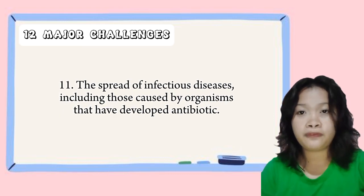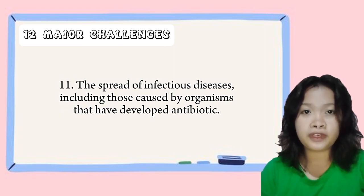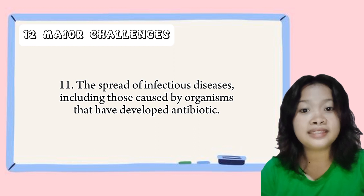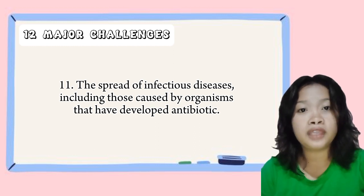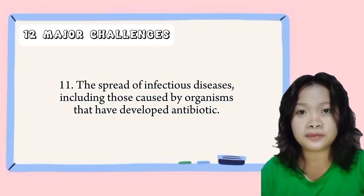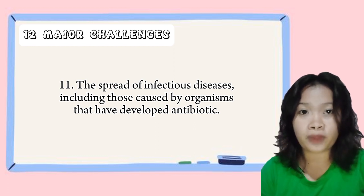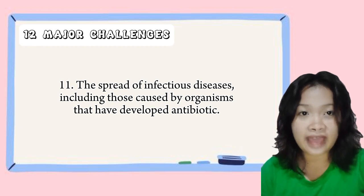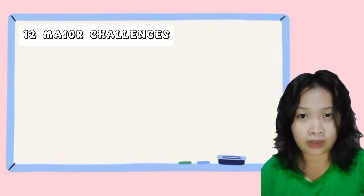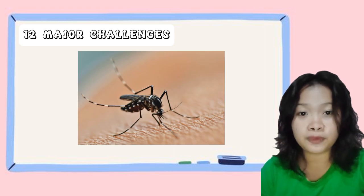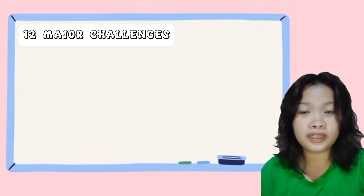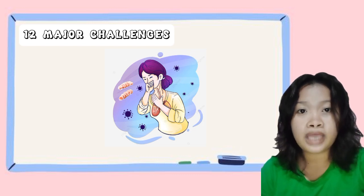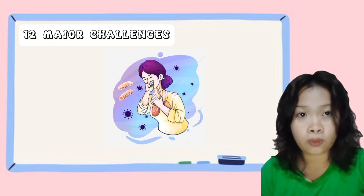Next is infectious diseases. The spread of infectious diseases, including those caused by organisms that have developed antibiotic resistance, is a major challenge. Infectious diseases are caused by microorganisms such as bacteria or viruses that can be spread from person to person or from animals to humans. The effects include illness or death in humans or animals. For example, malaria, which is spread by mosquitoes. Another example is tuberculosis, which can be spread through the air when an infected person coughs or sneezes.